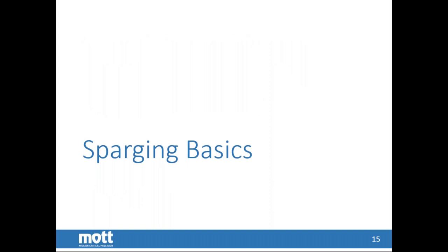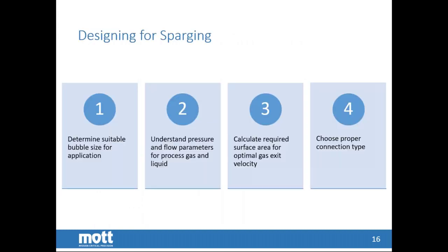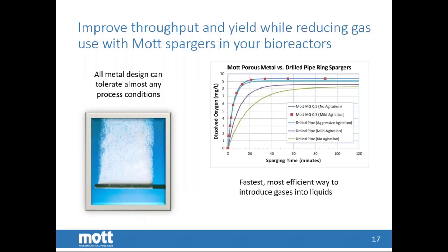We'll shift gears a little bit here and go into sparging basics. Designing a sparger, we will ask quite a few questions trying to determine the best media grade for your application. We need to understand the flow and pressures of the process. With that information, we can then calculate the surface area required to get the gas exit velocity we're looking for. And part of the conversation with customers is determining the proper connections for the gas, as well as for either the tank or the inline application. Using a porous metal for the sparger, you can see the image on the left, you get a lot of tiny bubbles. And if you compare it to a drill pipe, where you get fewer but much larger bubbles, the drill pipe has a lot lower surface contact area of the gas to the liquid.